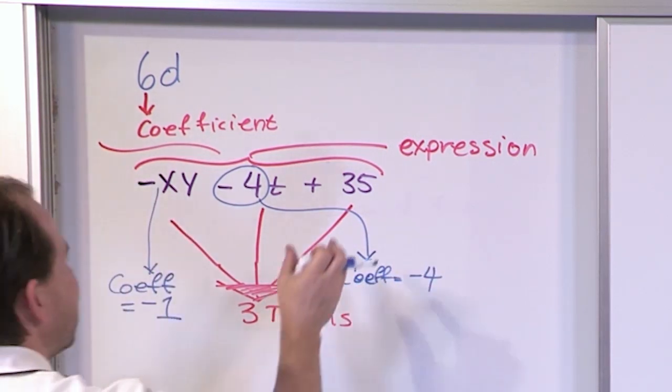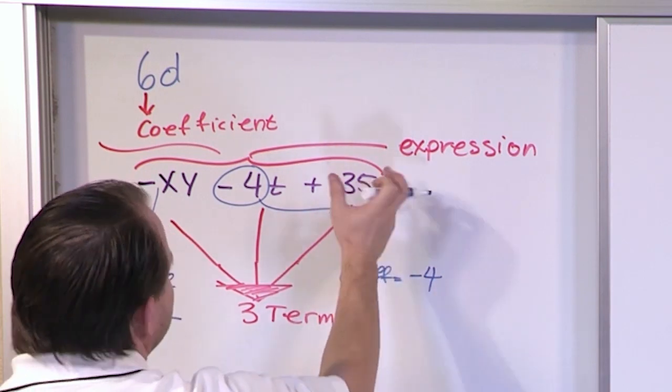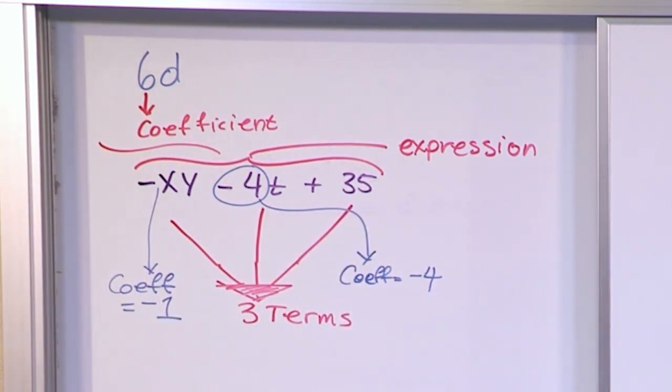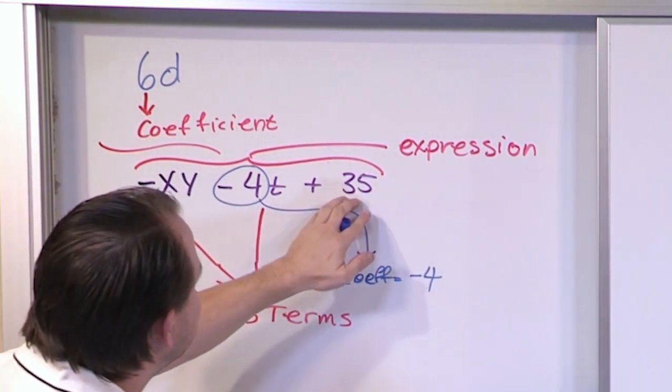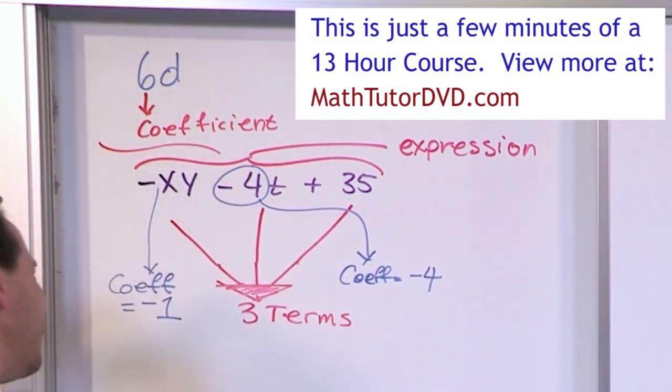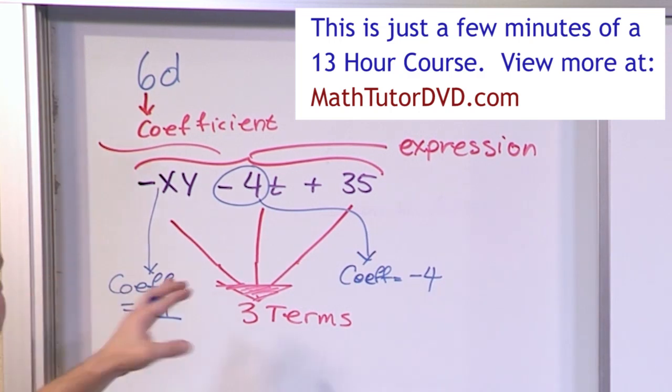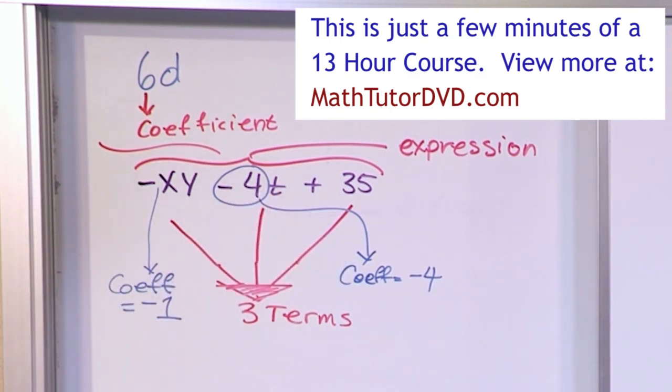And then for this last guy, there's no variable here. So you could kind of say the coefficient's 35. But since there's really no other letters there, you probably wouldn't be asked that. But if you just see a number, you could say the coefficient's 35. It's not as meaningful, though. Typically, coefficients are when you look at numbers that are sitting in front of letters.